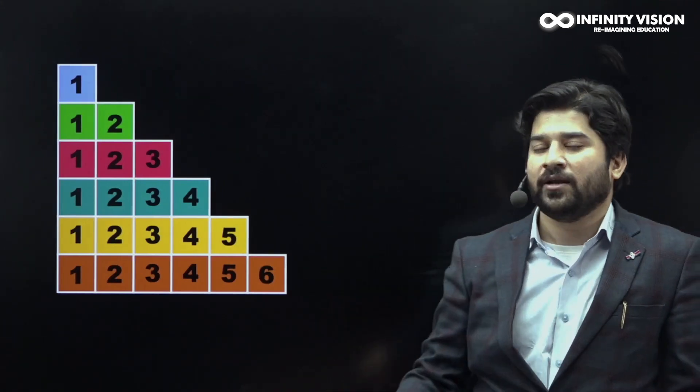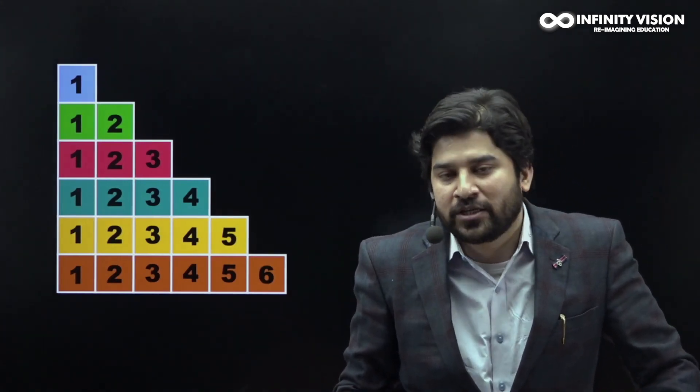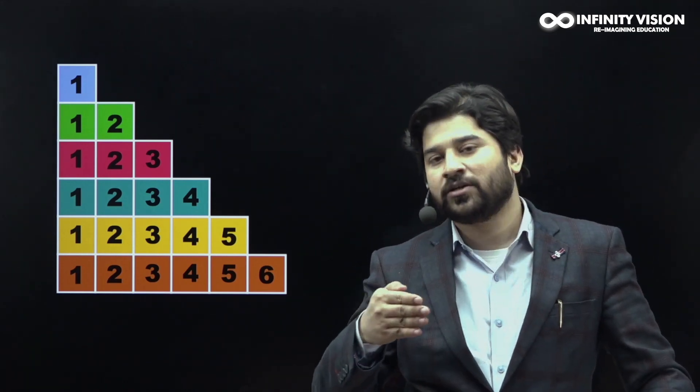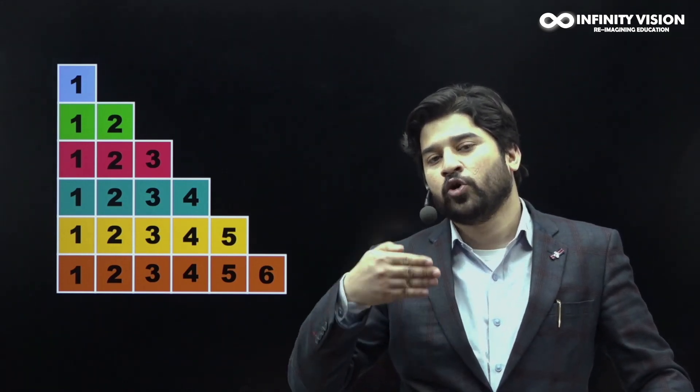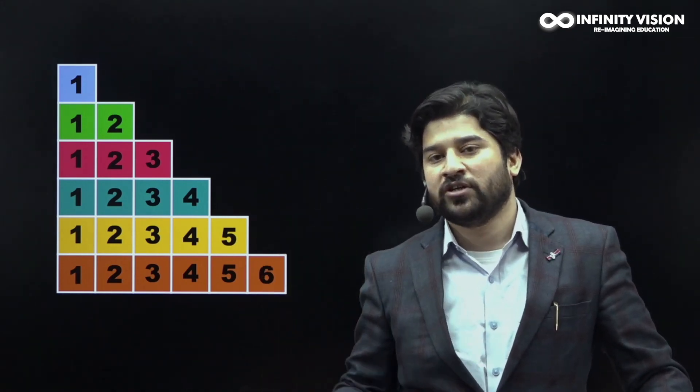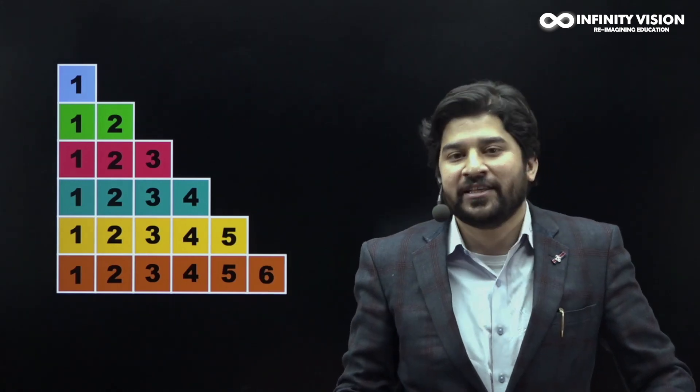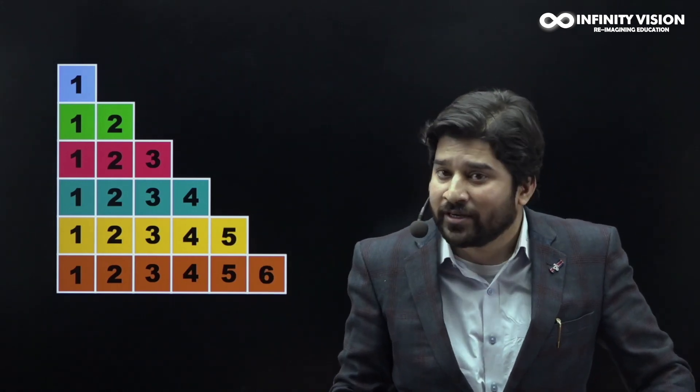The sixth triangular number is 1 plus 2 plus 3 plus 4 plus 5 plus 6. So as you can see, the sum of consecutive natural numbers right from 1 defines your triangular numbers.